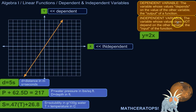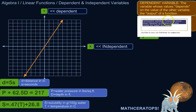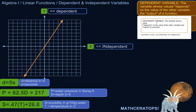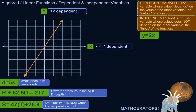The dependent variable is the variable whose value depends on the value of the other variable. So we're dealing with linear equations, you're going to have two variables. A lot of times we call them x and y, but you can call them whatever. The variable whose value is determined by the value of the other variable is called the dependent variable, because it depends on the other variable. Another way to look at it is the dependent variable is the output of a function.